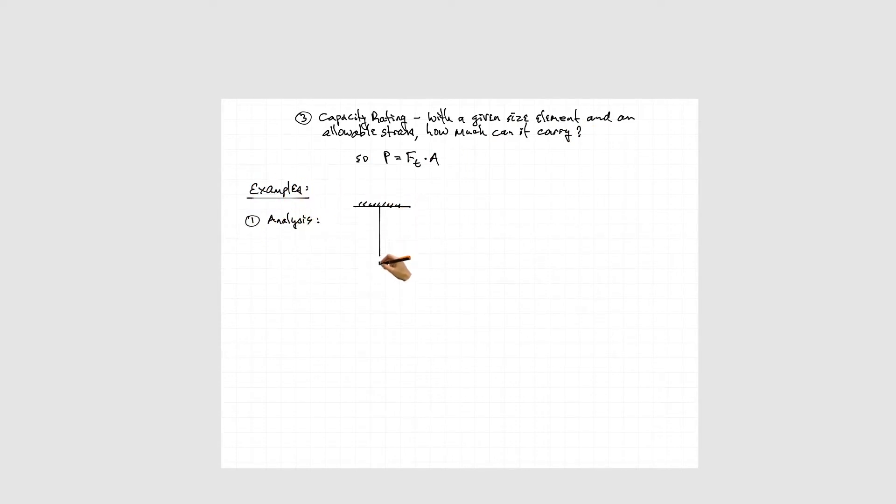Here is an analysis example. Let's say we have a rod that's two square inches in cross-section and it carries a load of 15 kips. If we divide that by our cross-sectional area of two square inches, we get a stress of 7.5 ksi, and that's less than our allowable stress of 22 ksi, so we're okay.